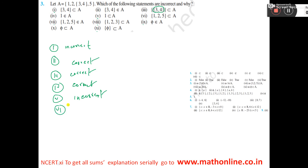Next, number 6: {1, 2, 5}. So, 1, 2, 5 — they form a set here. This set is a subset of A. It is correct.